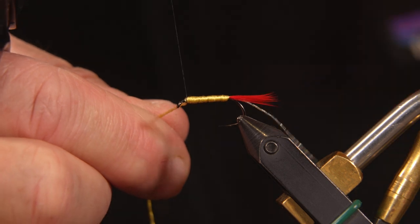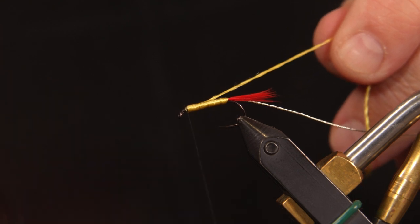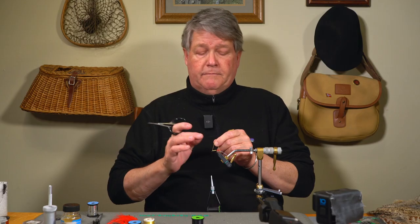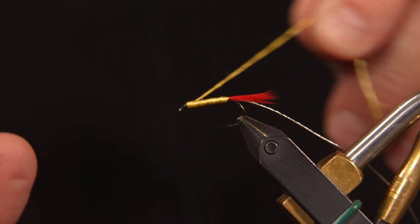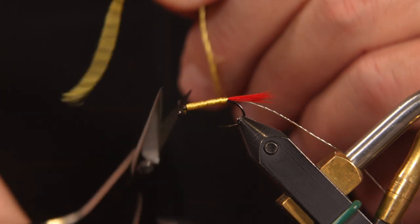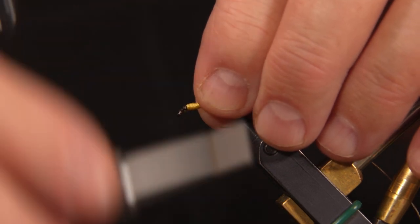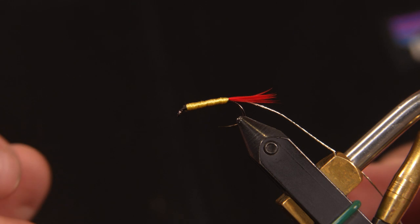I make one wrap behind, maybe a couple of wraps and this is where this 8-aught thread really comes in handy, it's very low bulk. But I've locked it in place by making a wrap behind, pulling the floss back, wrapping a couple in front, so when I do make my cut it's not going to unravel on me. Some people like to put in a half hitch at this point, I prefer not to.